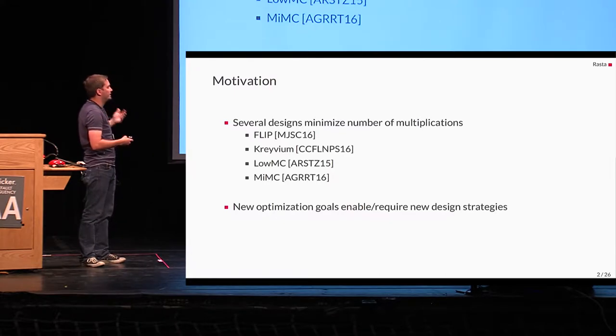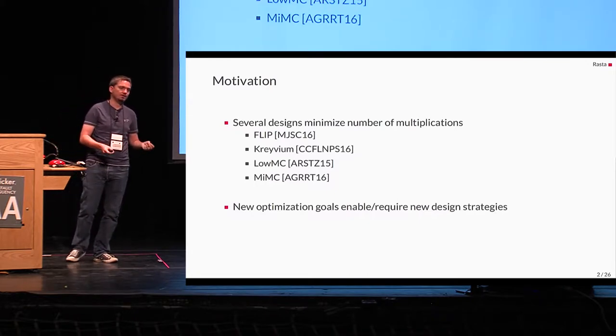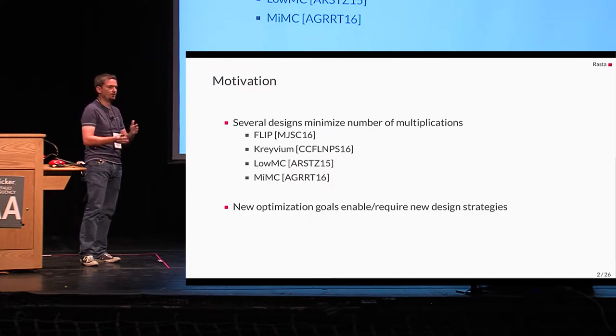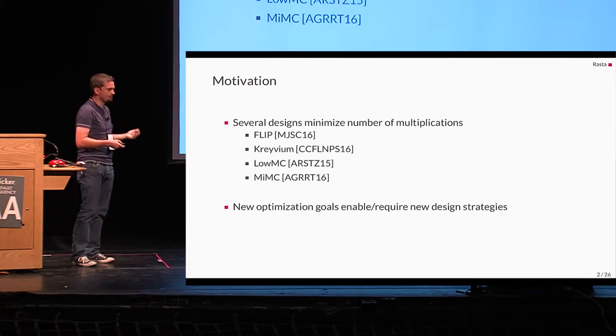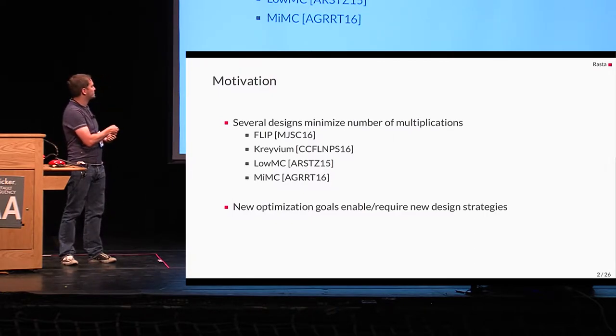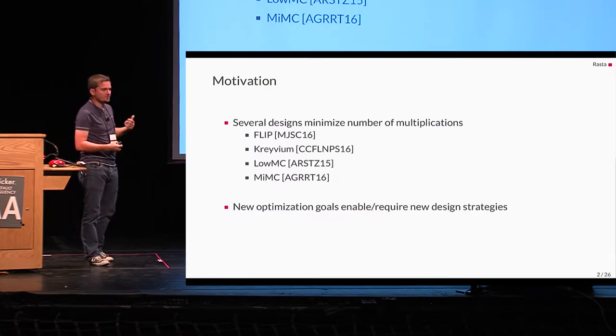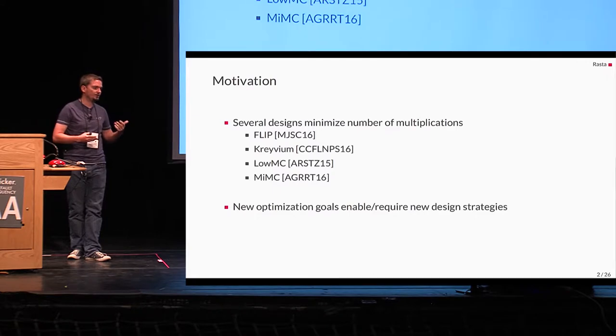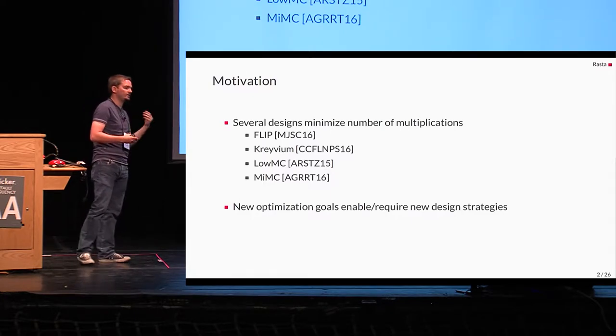Over the past years, we have seen several applications in homomorphic encryption, multi-party computation and even post-quantum secure signature schemes that can profit from dedicated symmetric primitives, which minimize the number of multiplications in one way or another. Clearly, this has then been addressed by designers who designed new primitives. For instance, FLIP, Crivium, LoMC, or MIMSI. Where the first three of those primitives here just focus on multiplications in GF2, which are simply AND gates. From a research perspective, having a new optimization goal is quite interesting because this allows or enables new design strategies for symmetric primitives and also requires new cryptanalysis techniques to get insight into the security of the resulting constructions.